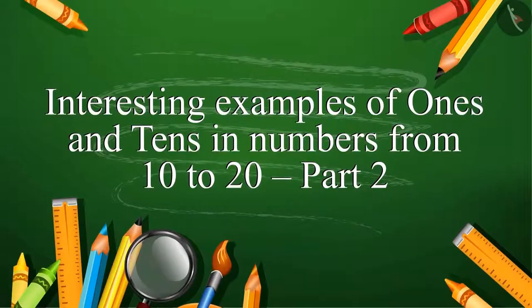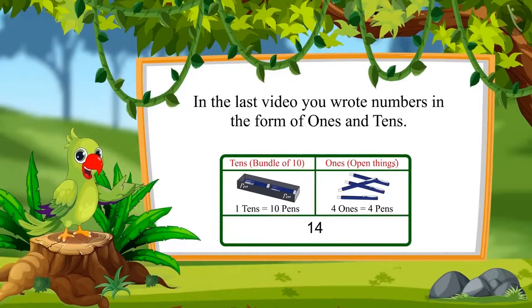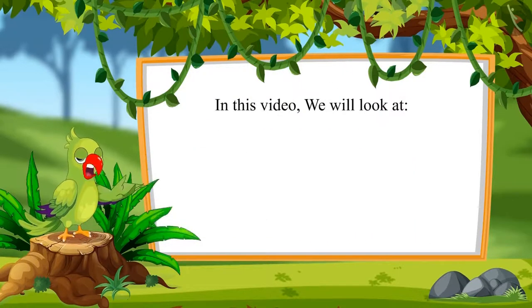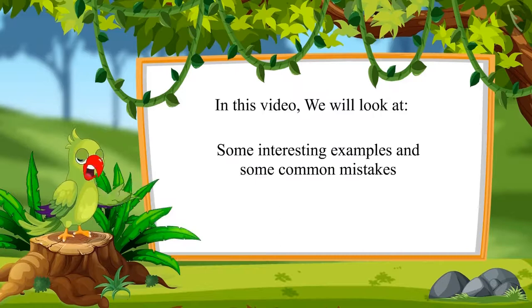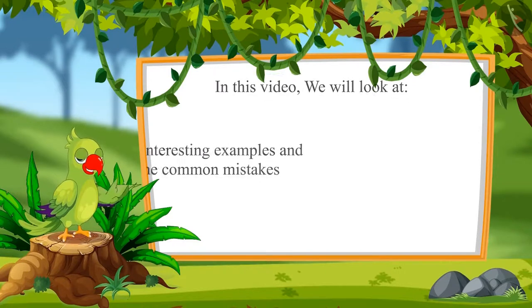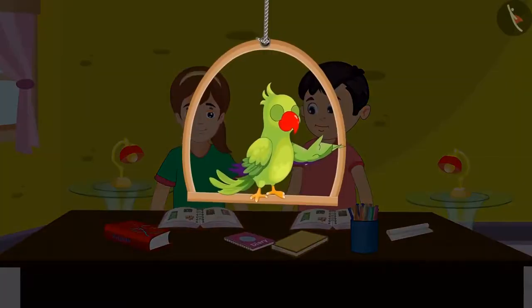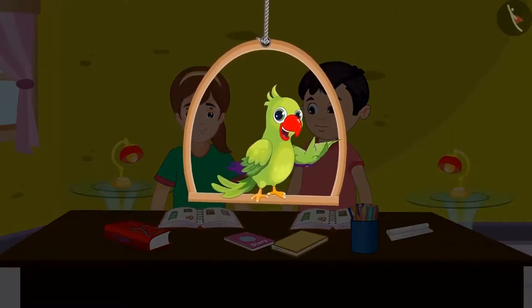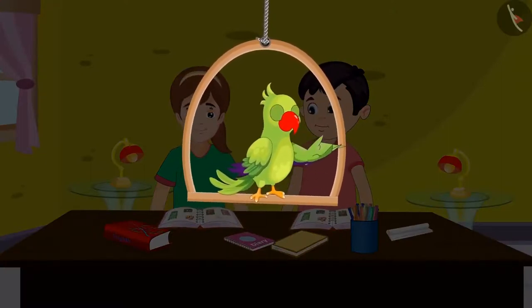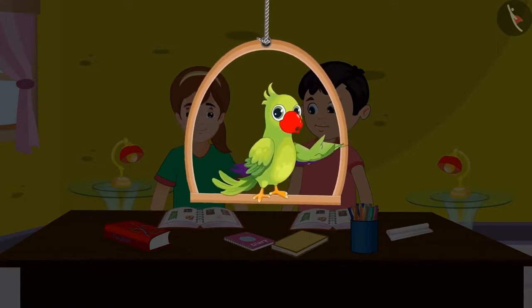Interesting examples of ones and tens, Part 2. So, children, in the last video you wrote numbers in the form of ones and tens. In this video, we will look at more interesting examples and we'll learn about some common mistakes that we should not do. Chotu and Aarti are studying together at Chotu's home. They had studied about ones and tens yesterday at school.